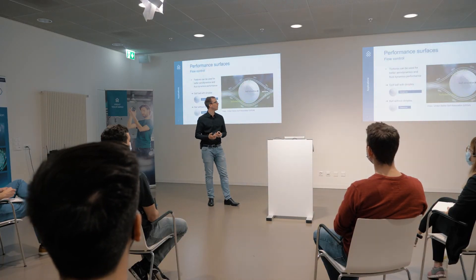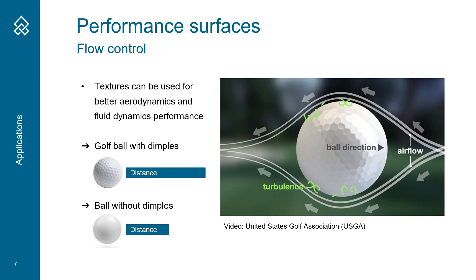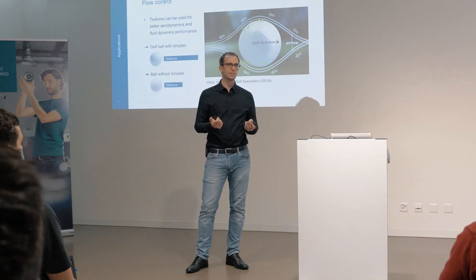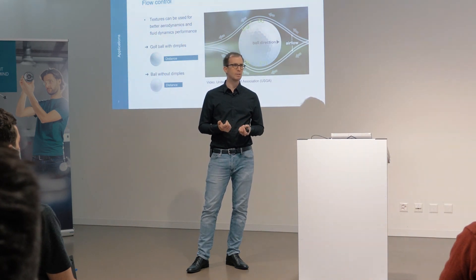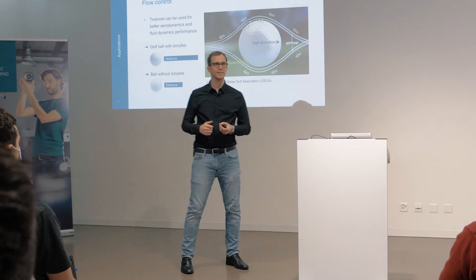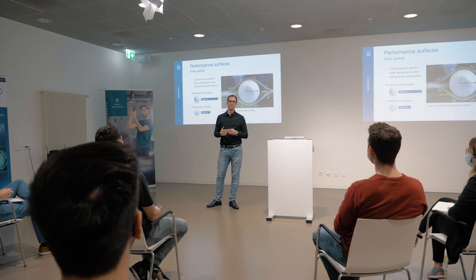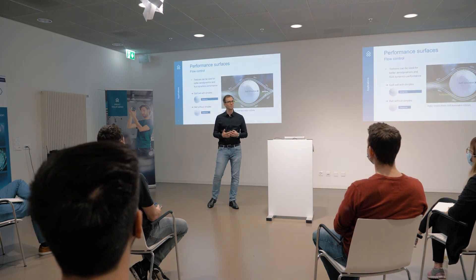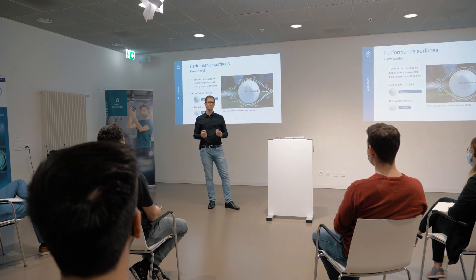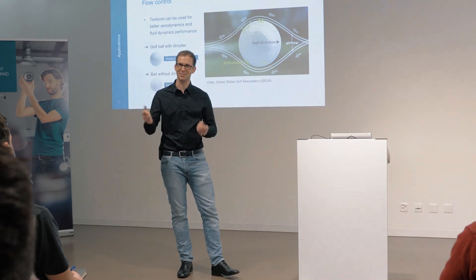The third example is performance surfaces for flow control. With 3D texture you can generate turbulence flow and improve the performance of your aerodynamics. If you ask yourself why does a golf ball have dimples — those small spheres in the ball — the reason is that a golf ball with dimples flies almost twice as far as one without. So 3D texture can make us better golfers — that's great!